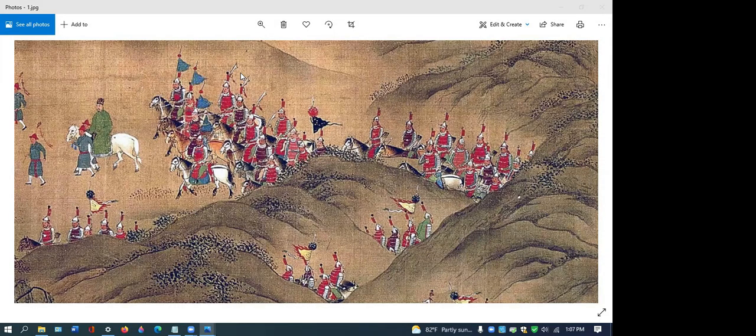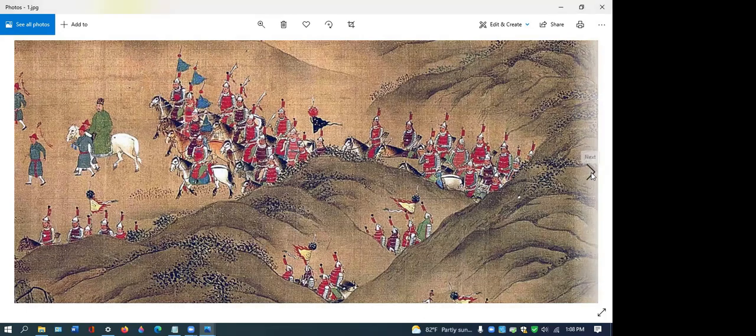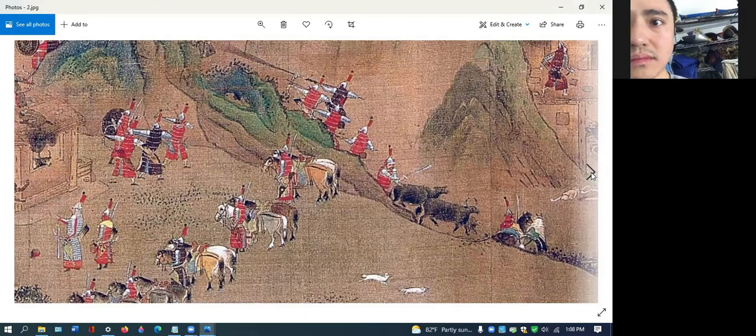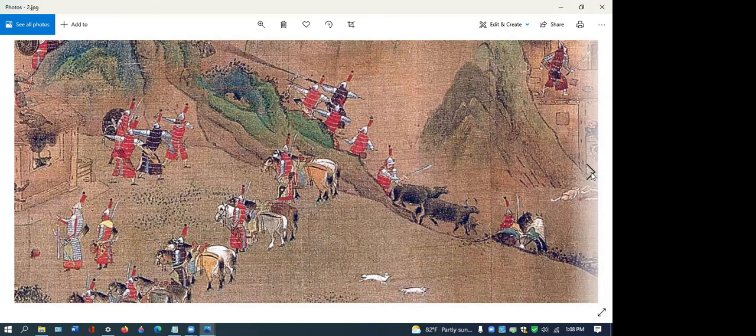And this is just a depiction of the soldiers wearing brigandine, performing various military maneuvers. Either here you see, some are archers, one's holding a musket at the very top. Others have melee weapons.